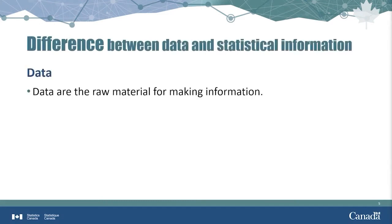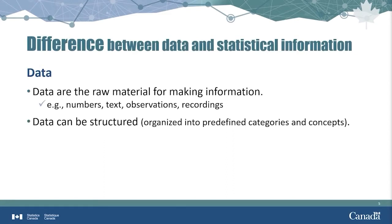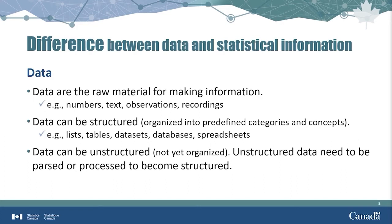Data are the raw material for making information. It can be, for example, in the form of numbers, text, observations, or recordings. Data can be structured, meaning that they're organized into predefined categories or concepts, such as lists, tables, datasets, databases, or spreadsheets. Data can also be unstructured, which means they're not organized. Unstructured data need to be processed or parsed to become structured before any further work can be done on them. A paragraph of text is an example of unstructured data, since the main ideas have to be extracted, or the phrases have to be parsed into smaller segments to use the text as data.